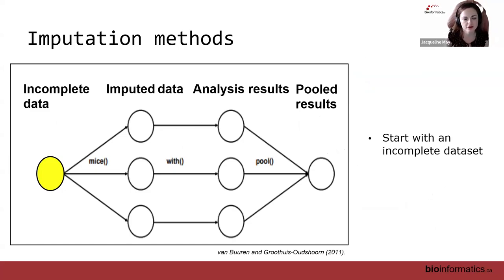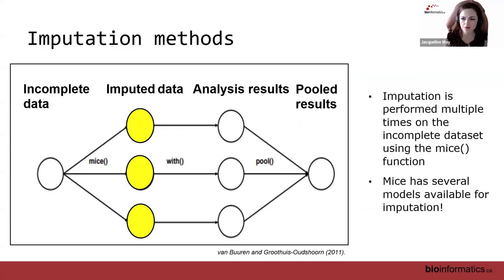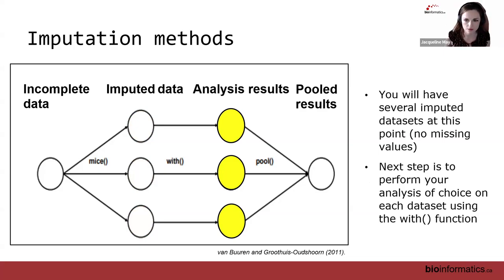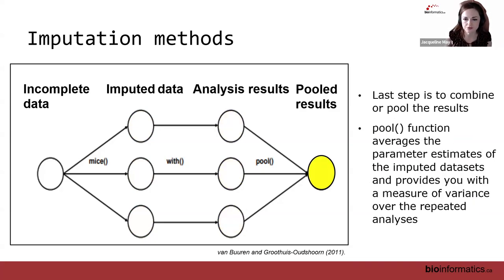The MICE multiple imputation workflow works as follows. You start with an incomplete data frame with missing values, then perform imputation multiple times using the mice() function — which has several models you can customize according to your data types. You'll then have several imputed datasets with no missing values. Next, perform your analysis of choice using the with() function — for example, applying a regression to each imputed dataset. Finally, combine or pool the results using the pool() function, which averages the parameter estimates and provides a measure of uncertainty, or variance, over the repeated analyses.